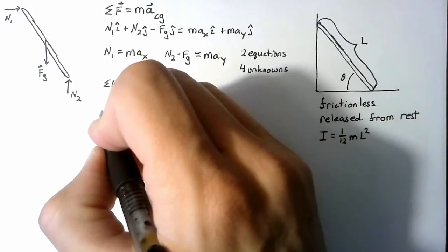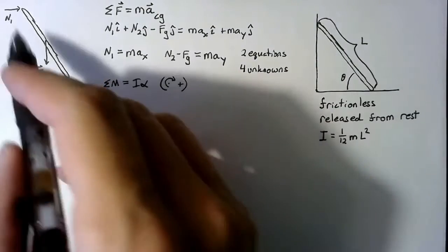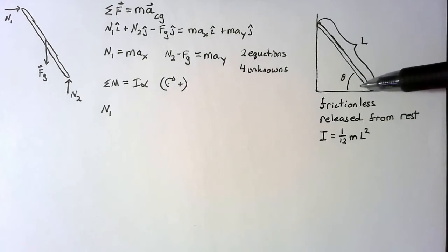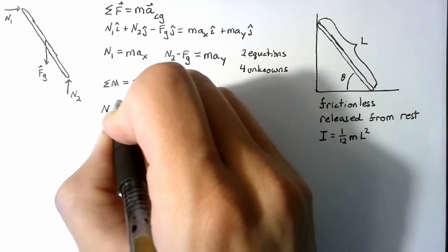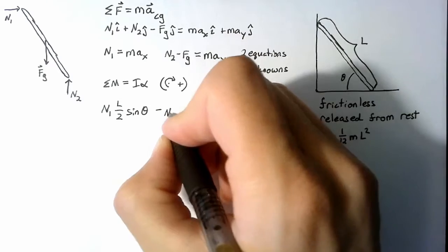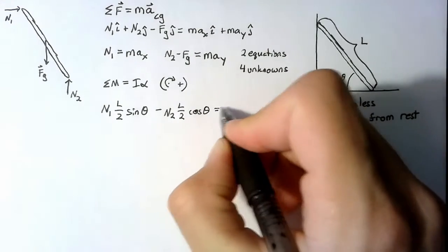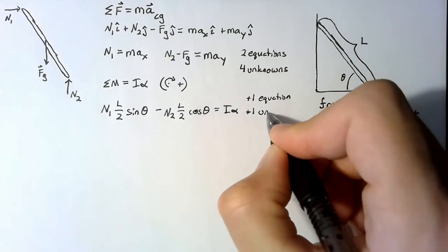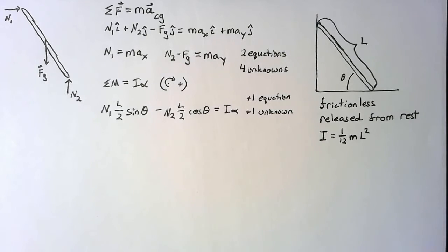The moment equals the force multiplied by the moment arm. For N1, the moment arm is the y distance from the contact point to the center of gravity: using theta, the hypotenuse is L over 2, so the arm is L over 2 sine theta. For N2, the moment is negative, and we use the x distance: L over 2 cosine theta. All together, this equals I alpha. So we've added one equation but also one new unknown, alpha, so the sum of moments didn't directly help us resolve the imbalance.